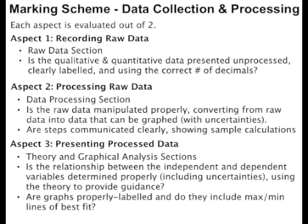This section is evaluated out of six. Aspect 1 is simply looking at the raw data section, whereas aspects 2 and 3 cover the rest of the section. Aspect 2 is more focused on converting the raw data into a form that can be graphed. Aspect 3 looks more at how the graph data is analyzed and the relationship determined. Formatting of graphs is also covered in aspect 3.